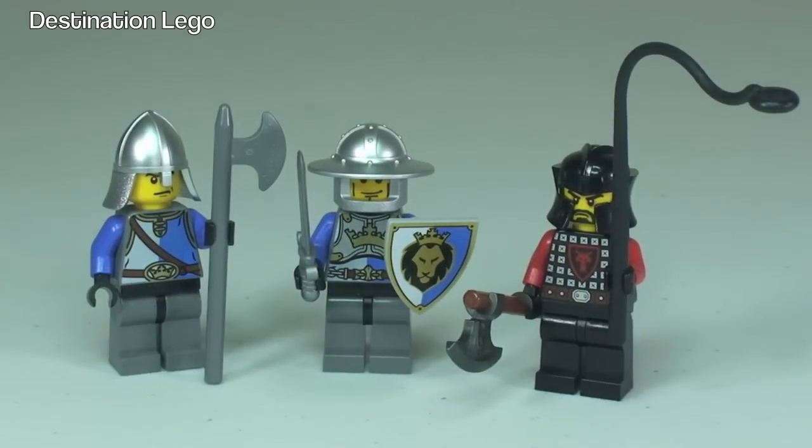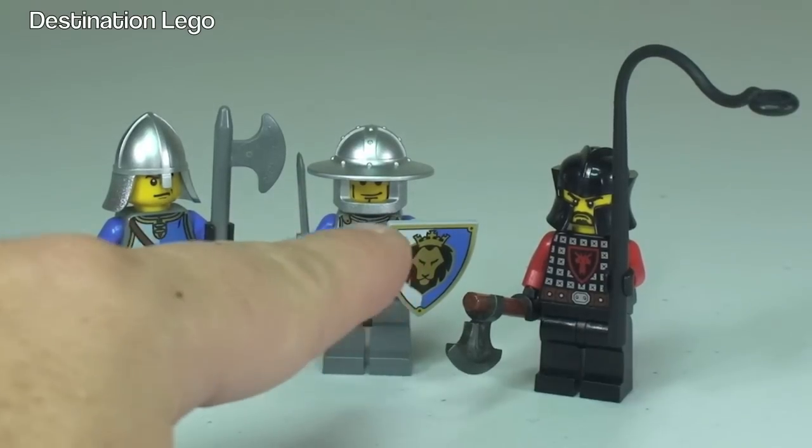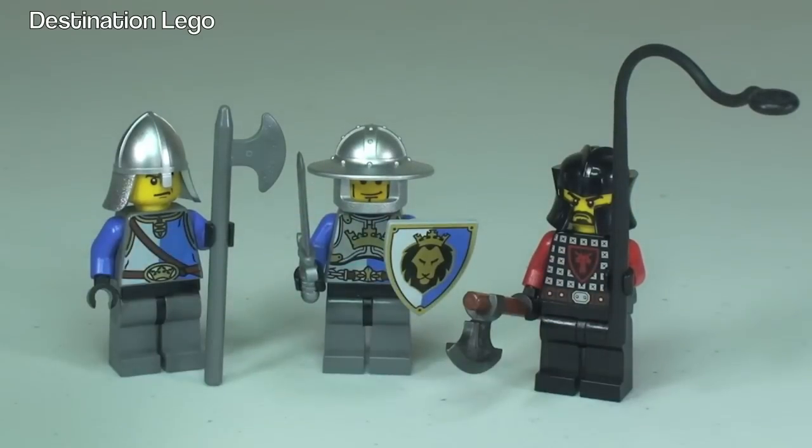As you can see, we have two minifigures from the King's Knights and we also have a Dragon Soldier. There's the front of all three minifigures and the accessories they come with. On the left we have this long axe, in the middle a sword and shield, and from the Dragons a small axe and whip which is obviously going to be for the horse towing the carriage.